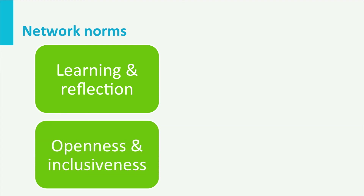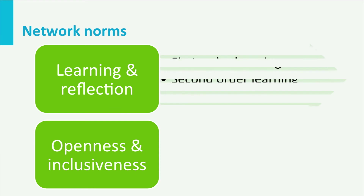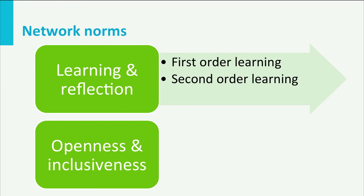With respect to learning and reflection, we can make a distinction between first-order learning and second-order learning. First-order learning is about how to achieve goals — for example, learning how to improve a technology. Second-order learning doesn't take existing goals as given, but is about what goals to achieve — for example, what values should be incorporated in the technological development and design.